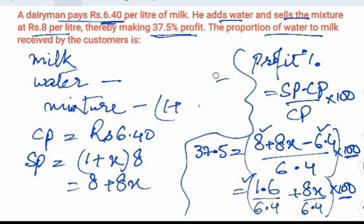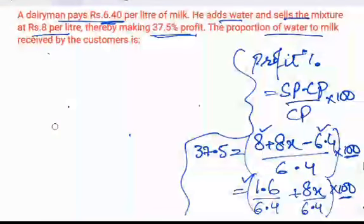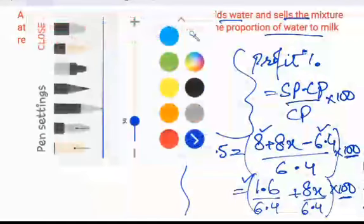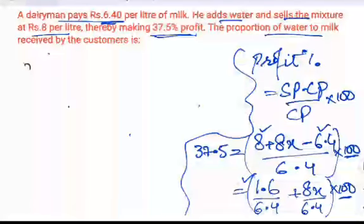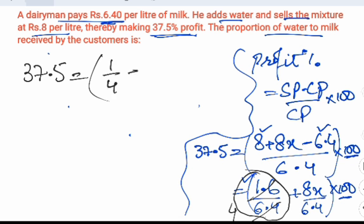Now we will try to calculate. So this 37.5 is equal to 1.6 by 6.4. So this comes out to be 1 by 4, because 1.6 into 4 comes out to be 6.4. So therefore we got 1 by 4.